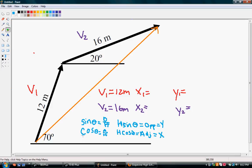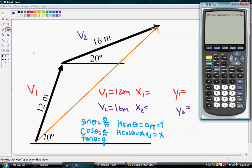And then we also have tangent theta. So, now what we have to do is use our calculator. And to find our x1, we're going to have to use our hypotenuse, which is 12 meters, and use cosine theta for the x. Our cosine theta is cosine 70. So, hypotenuse, cosine 70 degrees.